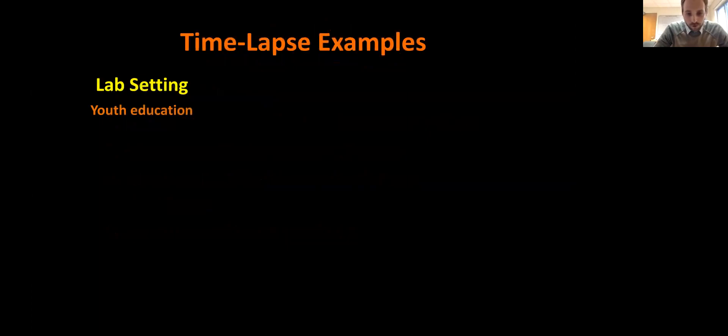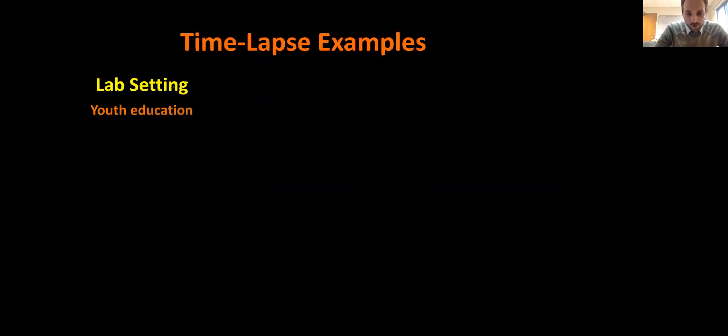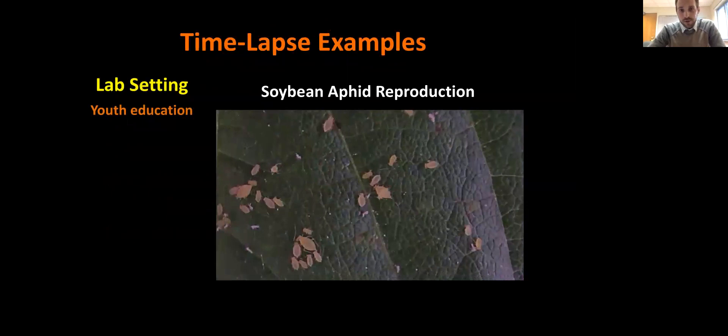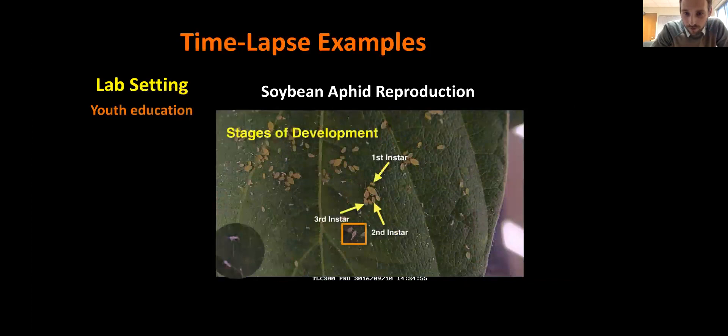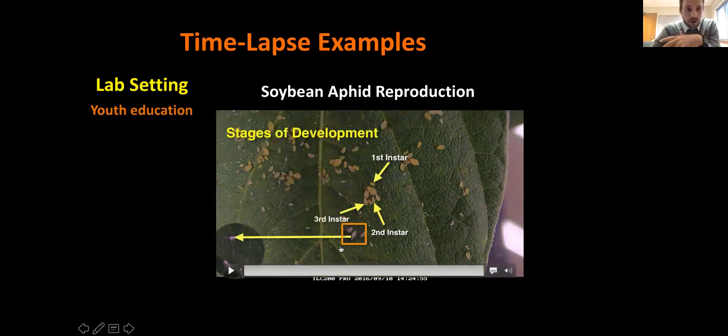We'll go through examples with different groups. The first is youth education — a soybean aphid reproduction video. This took very little time to put together. I took a time-lapse camera, put it on a leaf with a bunch of aphids, and left it for about seven hours. I came back, scrolled through the video, found where aphids were reproducing, and cut out a few small clips. A very simplistic video, but a good way of showing kids how aphids reproduce. We did this for an open house held in entomology.